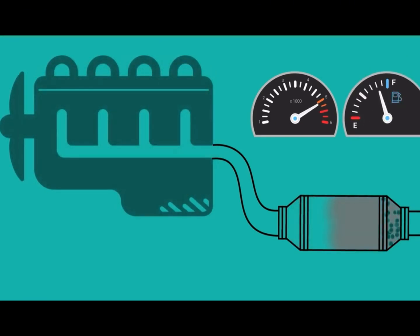The first sign of a blocked DPF is often a warning light on the dashboard of the vehicle, together with a noticeable reduction in engine performance.